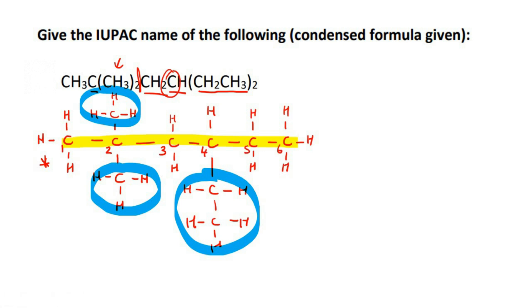So on carbon two, there is two methyl branches. So let's just write that in, methyl and methyl. On carbon four, there's two carbons in that branch. So that's an ethyl branch.